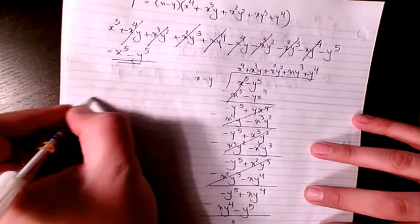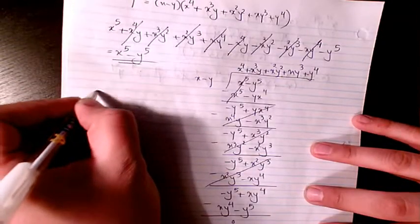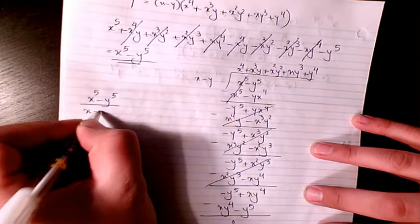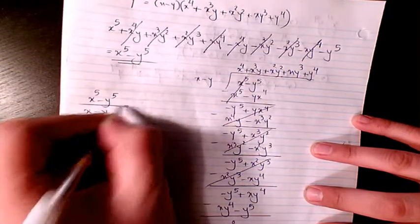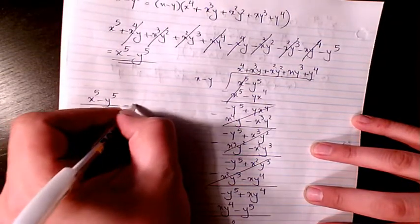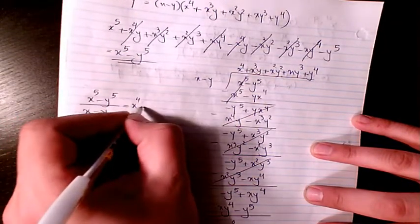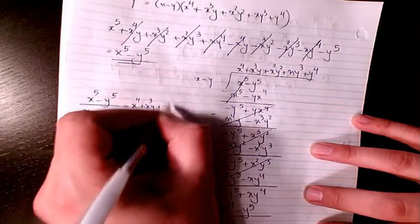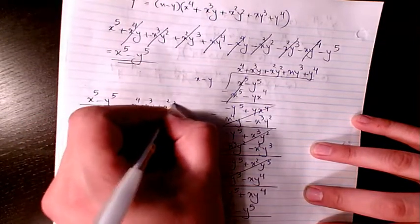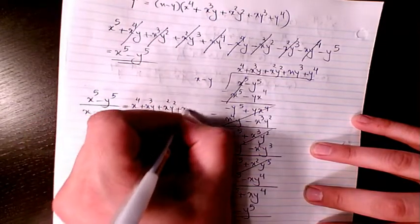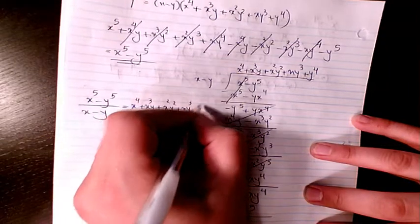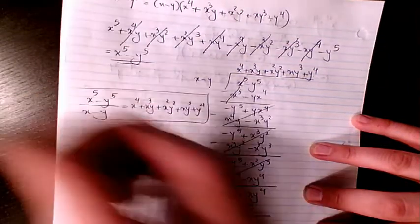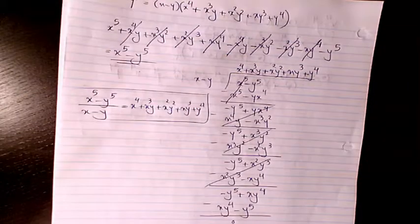So the answer is: x to the power of 5 minus y to the power of 5 divided by x minus y equals x to the power of 4 plus x cubed y plus x squared y squared plus x y cubed plus y to the power of 4. That will be the final answer.